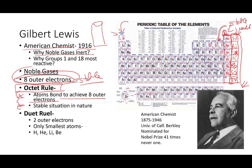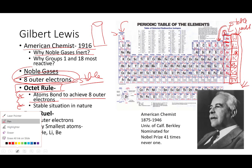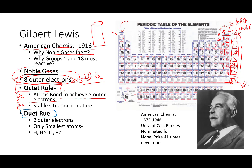Eight outer electrons works for the vast majority of the periodic table, but there are some elements that are tiny. The smallest elements don't follow the octet rule — they follow the duet rule, meaning two. If you have two people singing together, it's called a duet. The elements stable with two outer electrons are hydrogen, helium, lithium, and beryllium. Boron can kind of go both directions — octet or duet — depending upon how it's bonded.